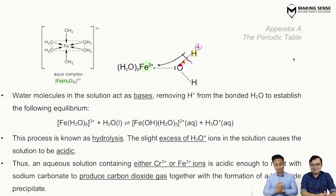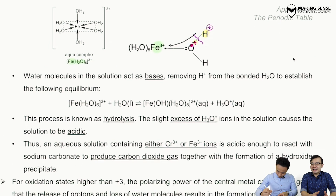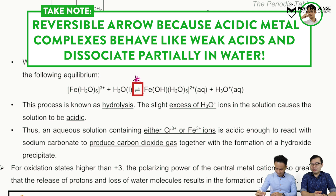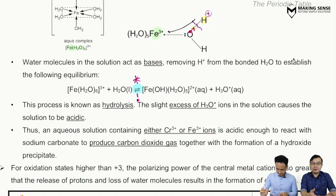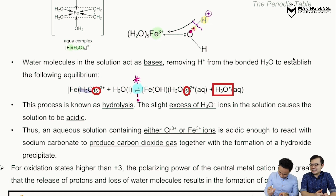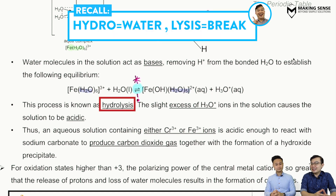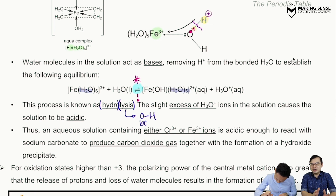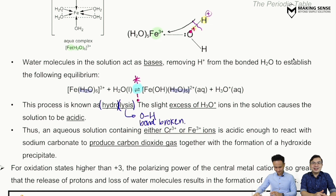An equation is used to illustrate this reaction — write it with a reversible arrow. The complex has one of its H₂O ligands break off its H+, giving the corresponding products. This process is known as hydrolysis — 'hydro' meaning water and 'lysis' meaning breakdown — so in this reaction the O–H bond of water is broken to release H+ ions.